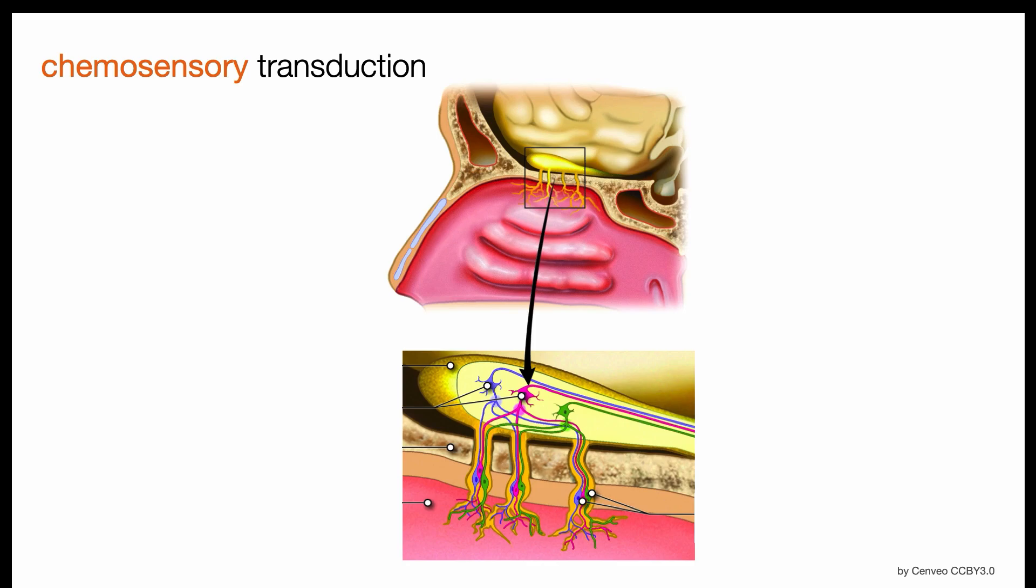Olfaction makes use of chemosensory transduction. When an odorant molecule binds to the cilia of an olfactory receptor, that smelly stimulus is transduced into a neural signal.